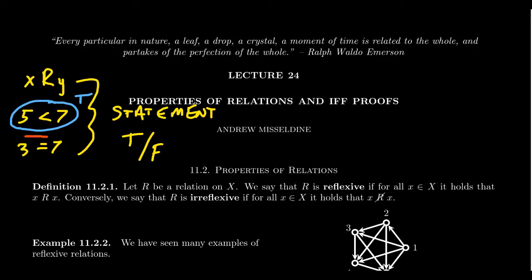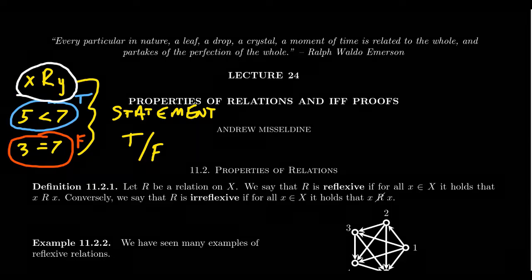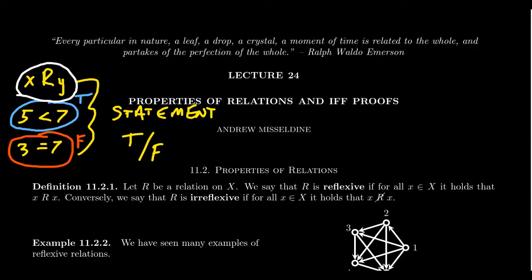These relations are in fact statements — they are either true or false. That's the only value you can give to a relational expression. 5 is less than 7 is a true statement. 3 is equal to 7 is a false statement. X is related to Y is an open statement because we don't know what X, Y, or R are. But every relational expression is a statement — it's either true or false.